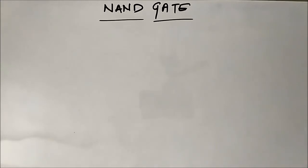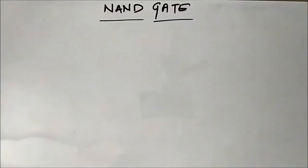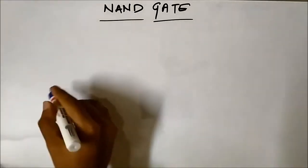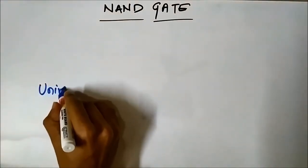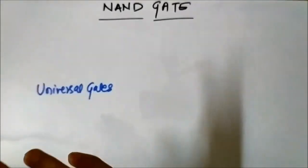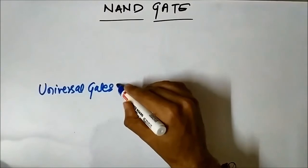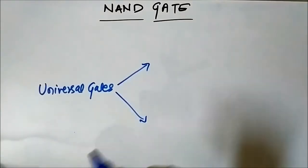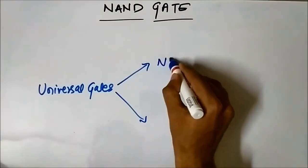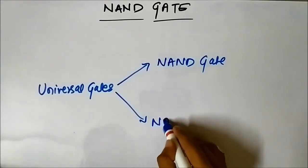all the logical expressions can be represented using these gates alone. That's why they are called universal gates. There are two universal gates: the first one is the NAND gate, which we are going to discuss today, and the second one is the NOR gate.